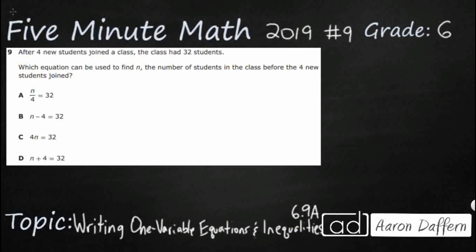So we have a fairly simple problem here. We have four students that are new, they're joining a class and then after they join you have a total of 32 students. So which equation can be used to find n, the number of students in the class, before the four new students joined? Well if we know that our end result is 32 and we know that there were four new students that came, well I'm thinking we can probably just subtract those four. Let's see how many students we had. That makes the most sense.